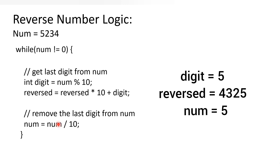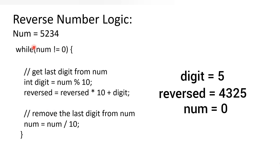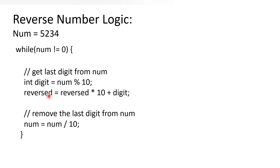Now 0 is not not-equal to zero, so the loop condition becomes false and we exit. The final value of reverse is 4325, which is the reverse of our original number 5234. Once we have the reverse, we just need to check whether it equals the original number — if yes, it's a palindrome.